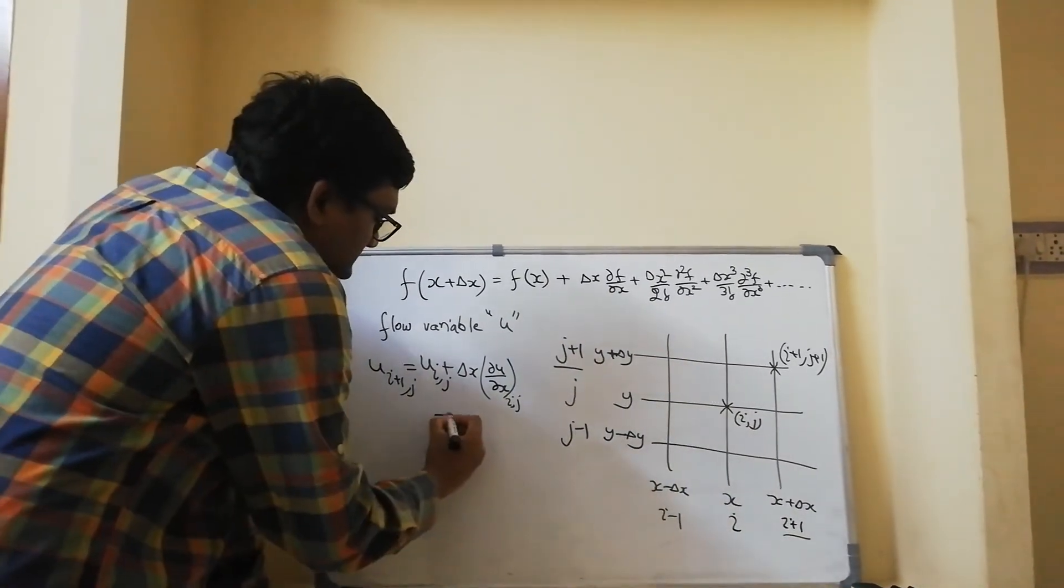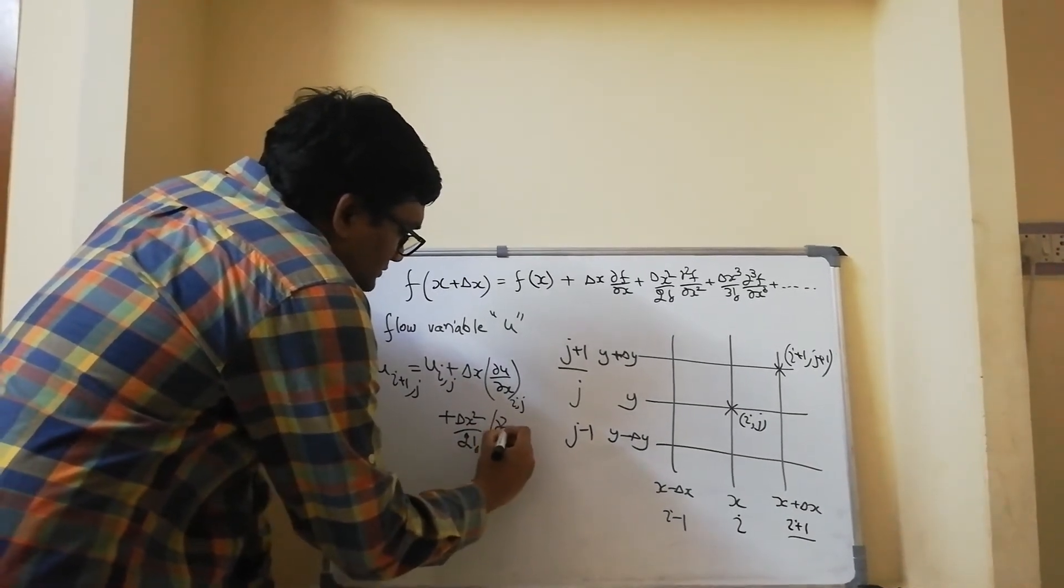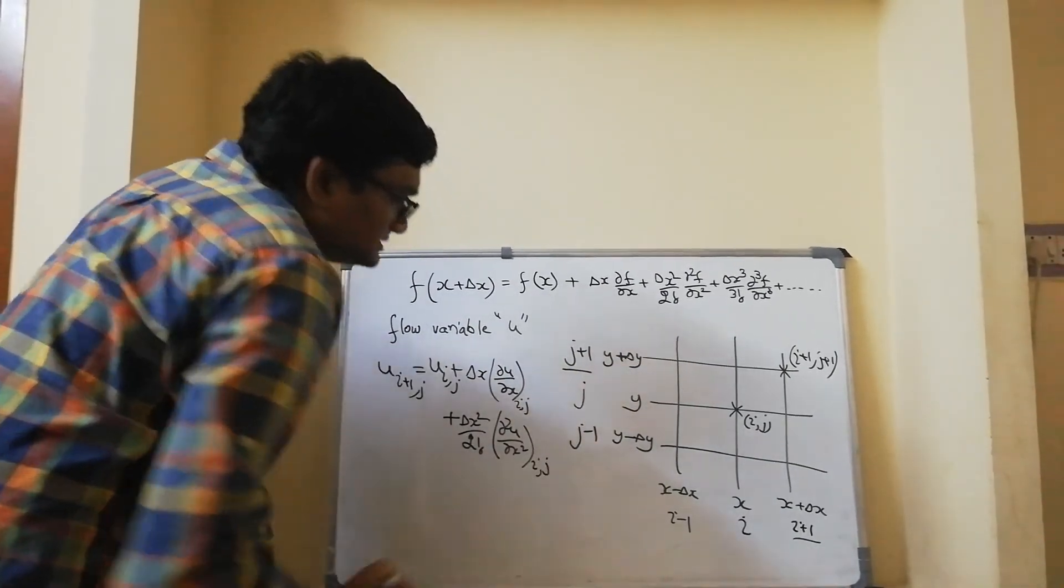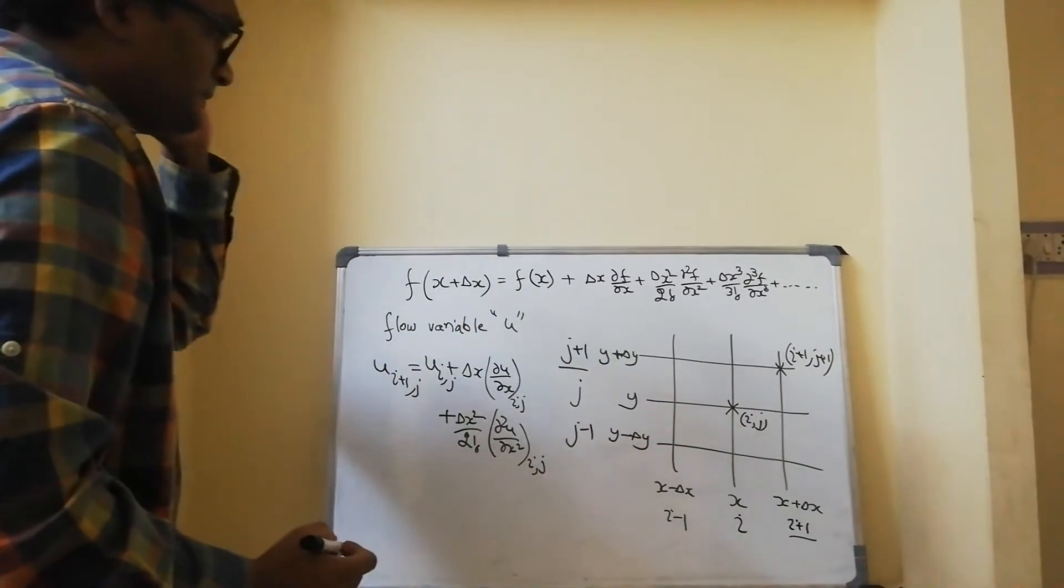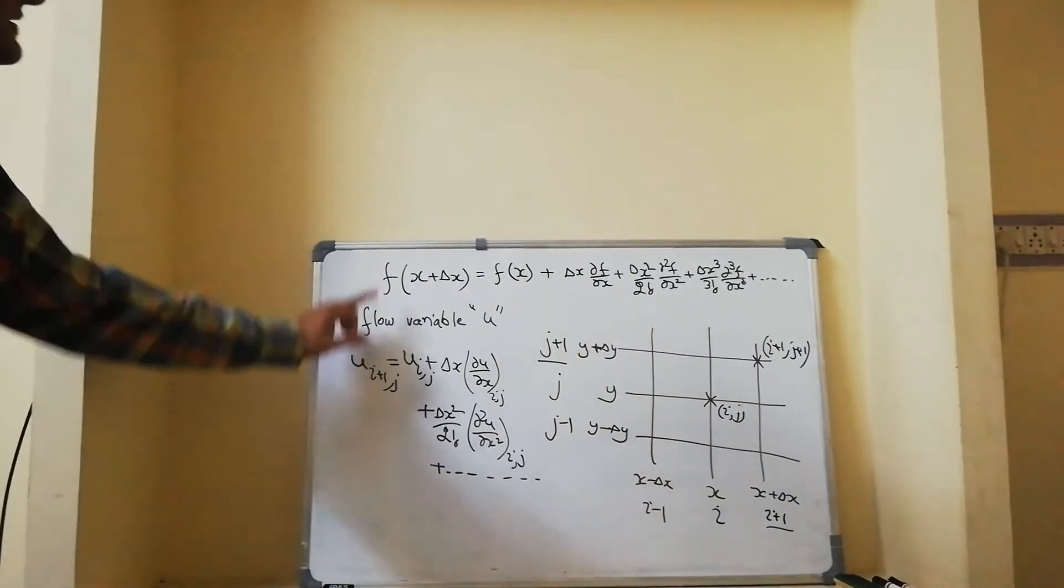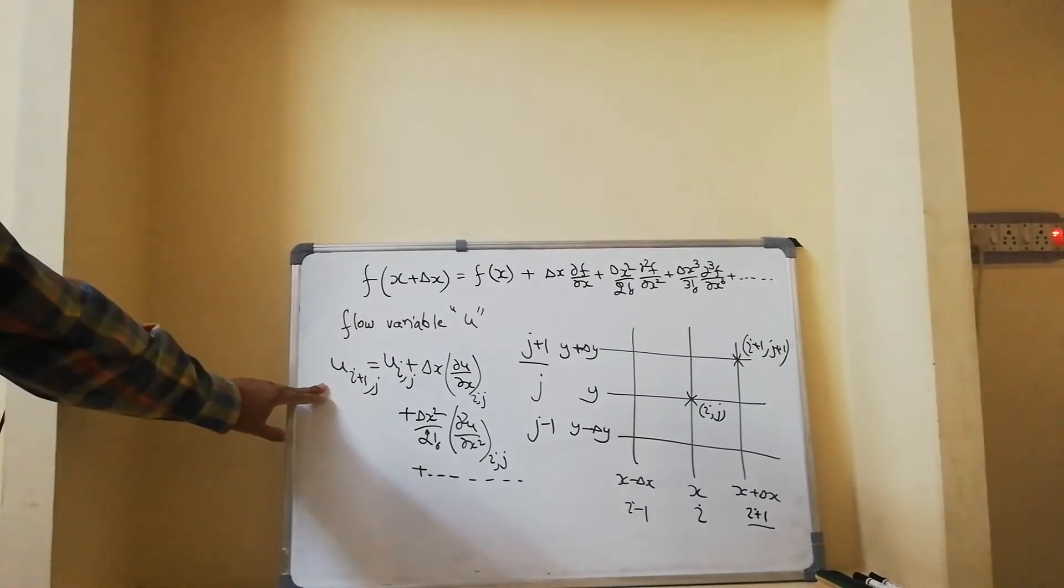Plus delta x square by 2 factorial, dou square u by dou x square at location i comma j, at this point, and so on. This is the same expression or same infinite series in index terms.